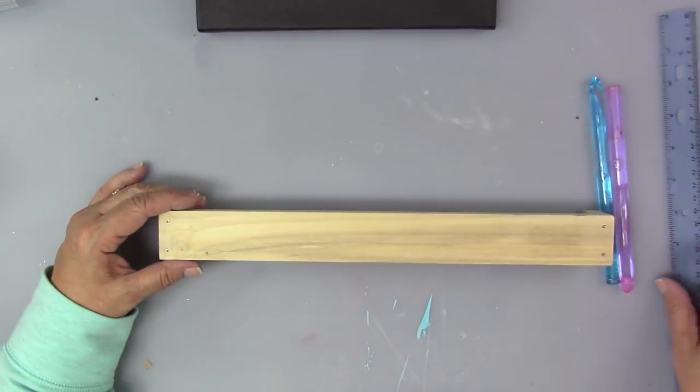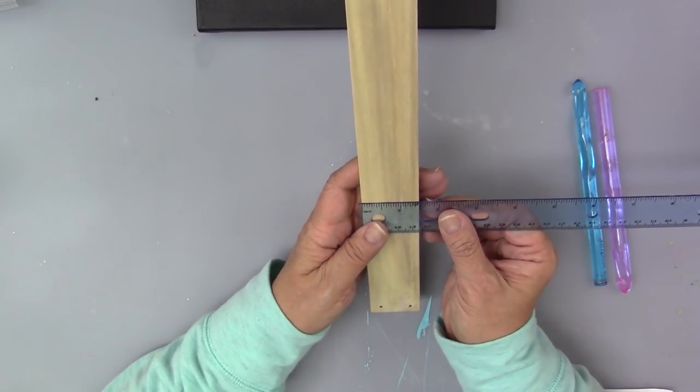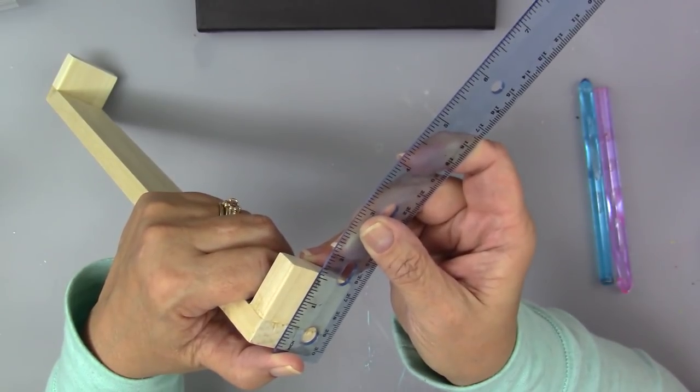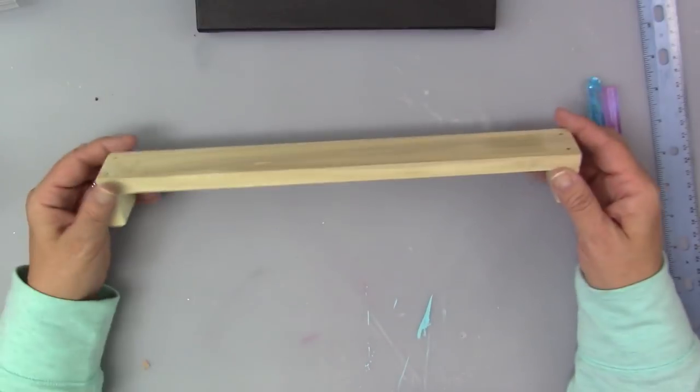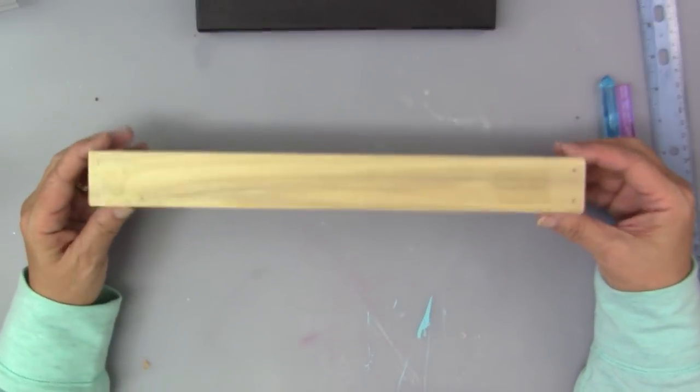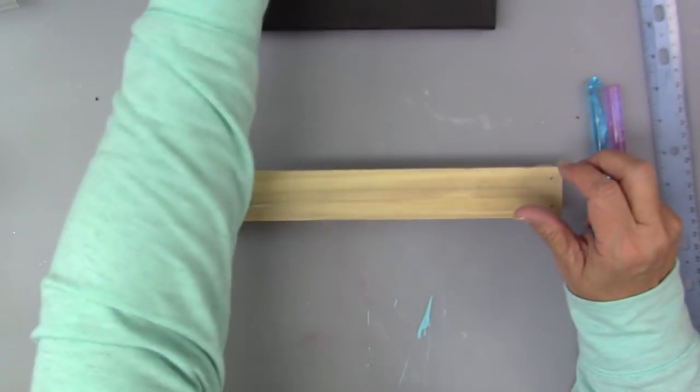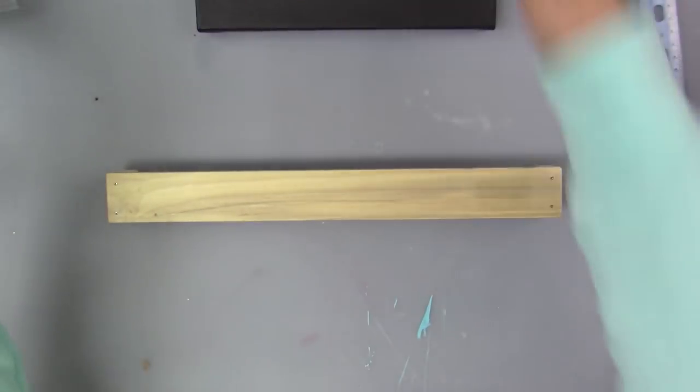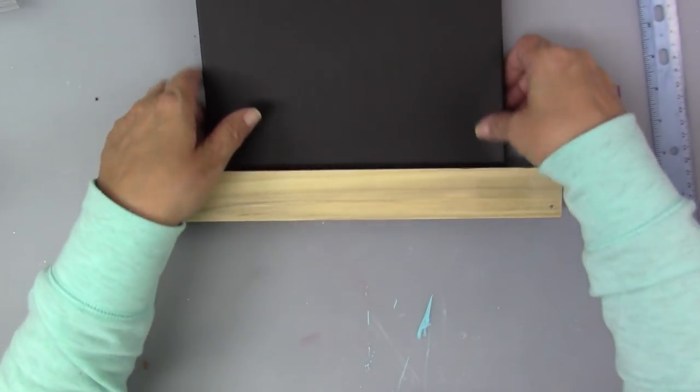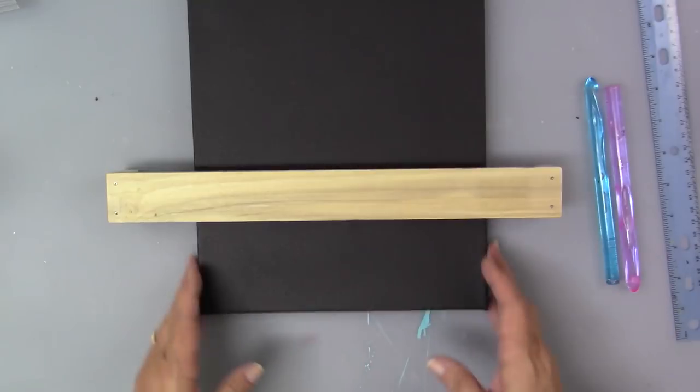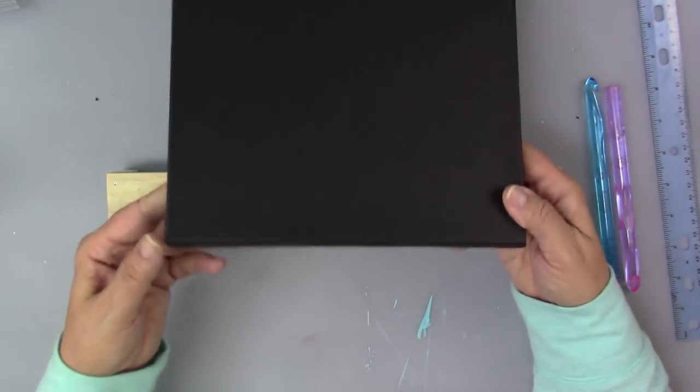So it's 13.5 inches and it's about just a little over one and a half inches tall so it's a really good height. Let's see how this works. I have a 9 by 12 canvas and I'm just going to slip it through and see how easily it goes through and you can see it's got a nice clearance there so it'll fit my canvas well.